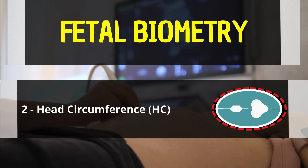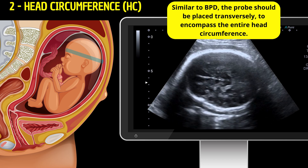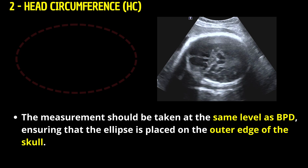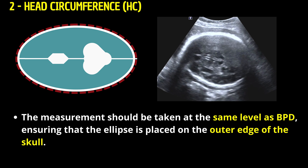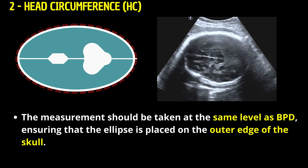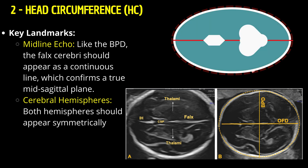Head circumference — positioning the probe: Similar to BPD, the probe should be placed transversely but may need slight adjustments to encompass the entire head circumference. The measurement should be taken at the same level as BPD, ensuring the ellipse is placed on the outer edge of the skull. Complete visualization around the perimeter of the skull ensures the measurement includes all relevant bony structures. The falx cerebrae should appear as a continuous line, confirming a true mid-sagittal plane.